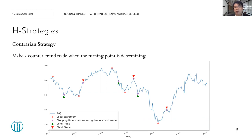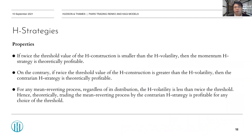For the contrarian strategy, investors sell the tradable process when they decide it has moved far enough from its previous local minimum and expect it to reverse downward, and buy when it has moved far enough from its previous local maximum and expect it to reverse upward. The paper shows that the momentum strategy is theoretically profitable when twice the threshold value of the edge construction is smaller than the edge volatility, while the contrarian strategy is profitable when twice the threshold is greater than the edge volatility.